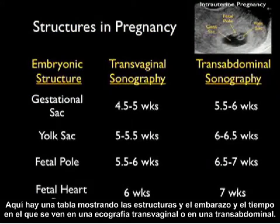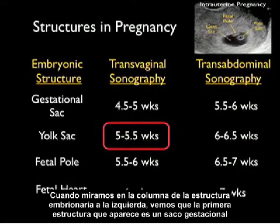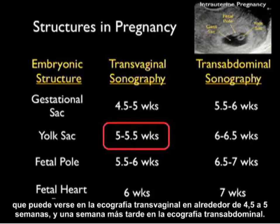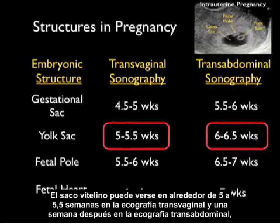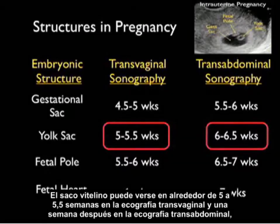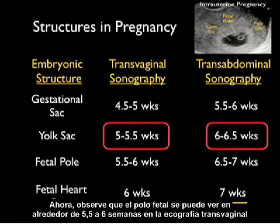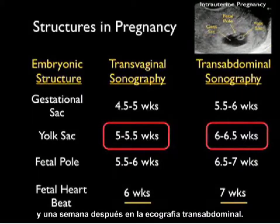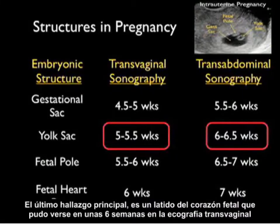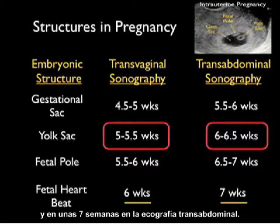Here's a table showing pregnancy structures and when they're seen on transvaginal versus transabdominal sonography. The gestational sac is seen on transvaginal sonography at about 4.5 to 5 weeks and about a week later on transabdominal sonography. The yolk sac is seen at about 5 to 5.5 weeks on transvaginal sonography and a week later transabdominally — this is how we diagnose an intrauterine pregnancy. The fetal pole is seen at about 5.5 to 6 weeks on transvaginal sonography and a week later transabdominally. Fetal heartbeat is seen at about 6 weeks on transvaginal and about 7 weeks on transabdominal sonography.